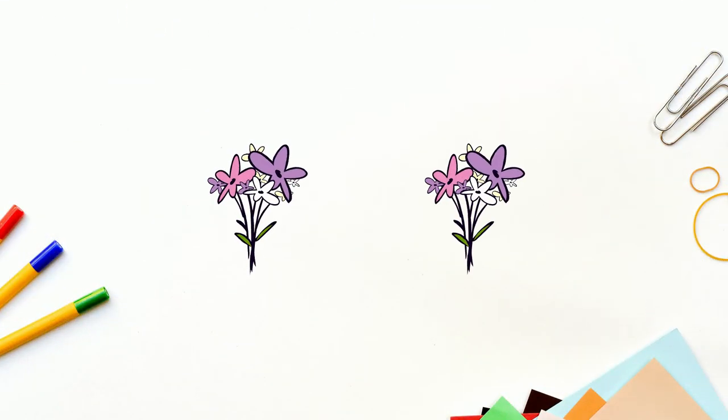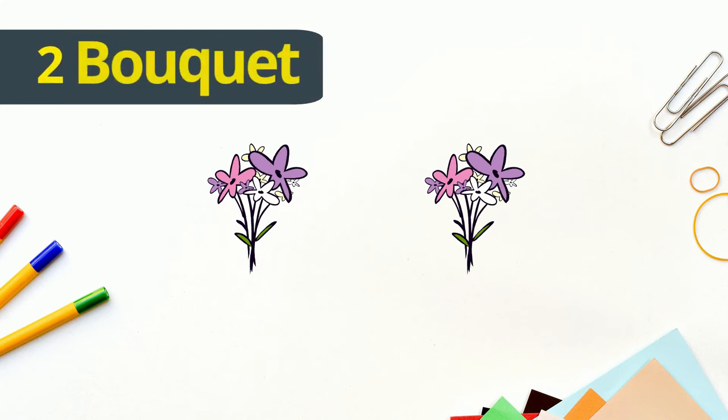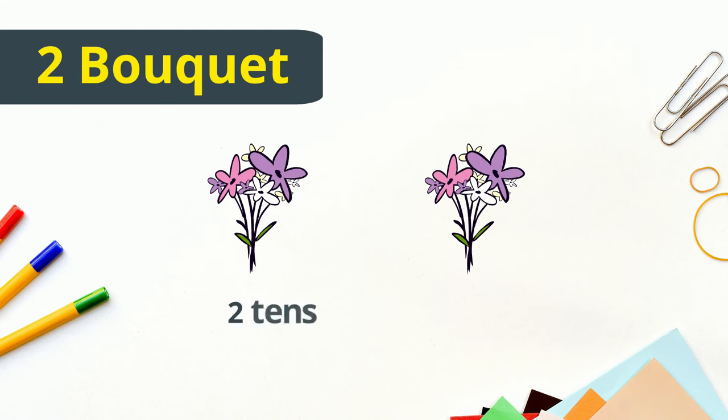Now see, we have two bouquets of flowers. That means we have two tens of flowers, that is equal to twenty flowers.